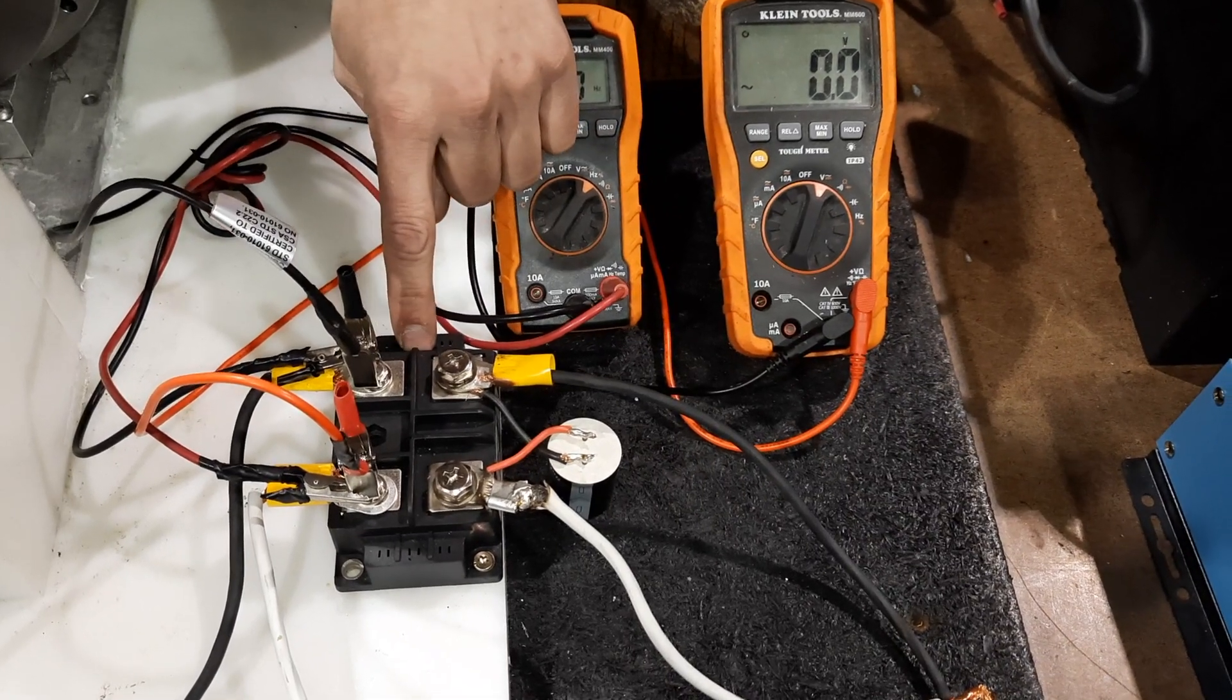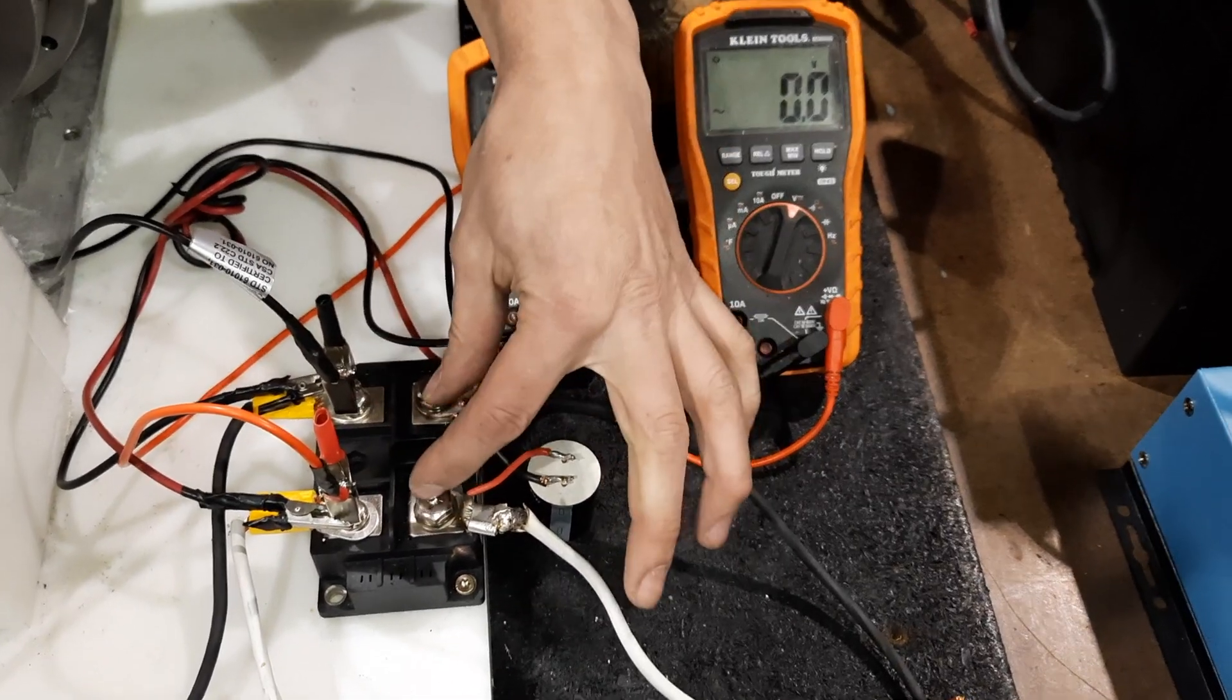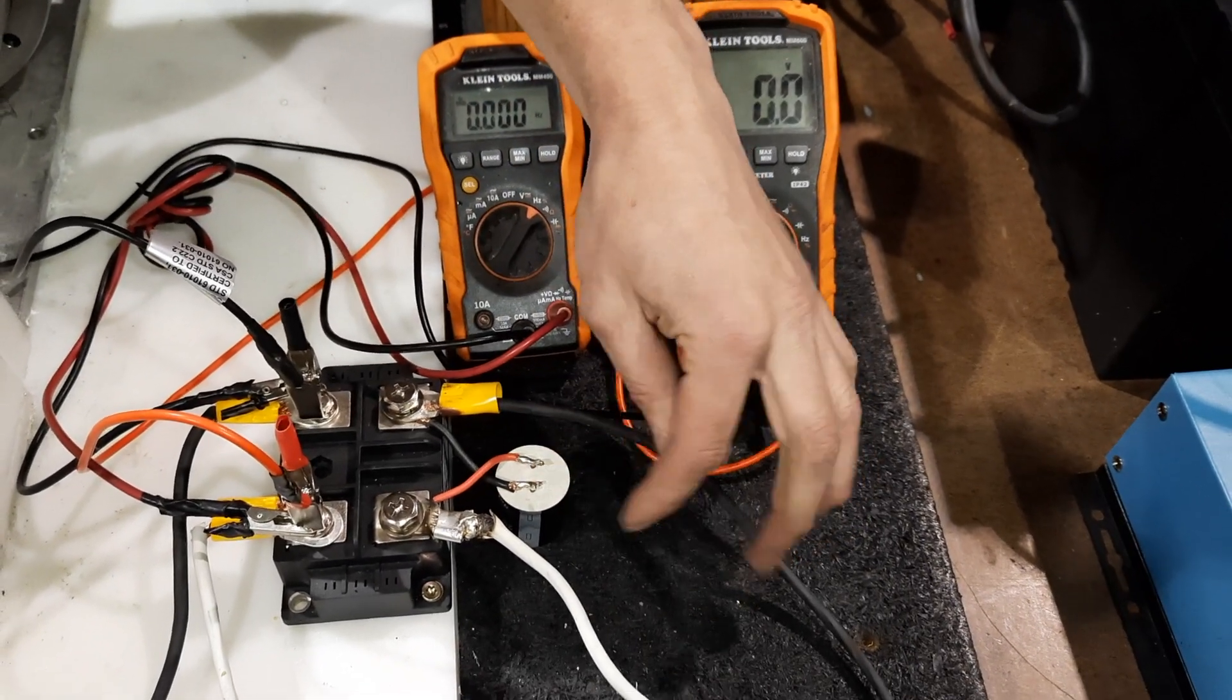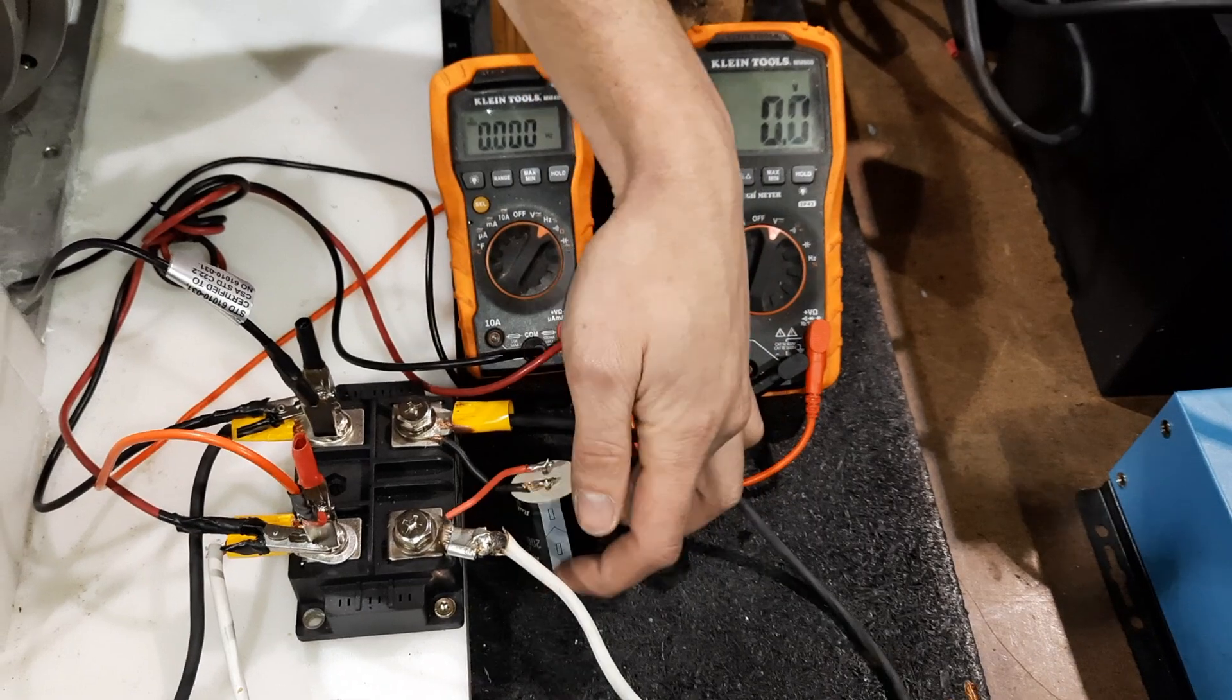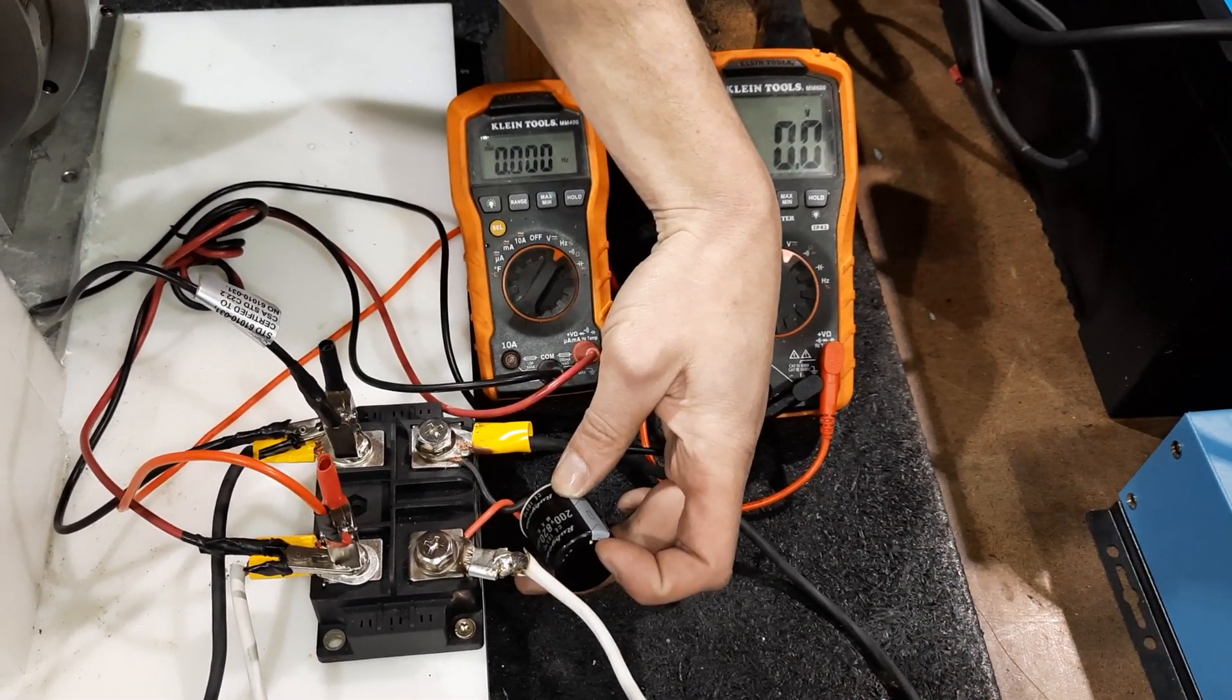This is a 1600 volt, 400 amp bridge rectifier. On the output side, the DC, we charge this capacitor here, which is a 200 volt, 820 UF.